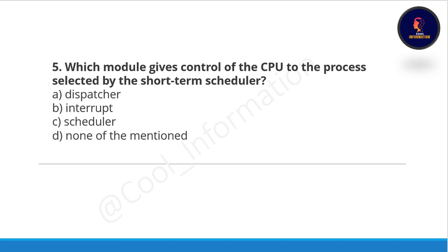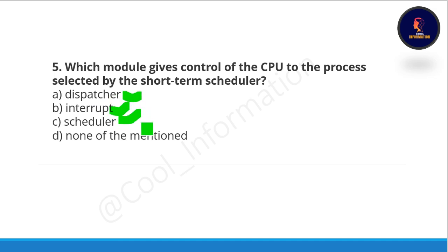Question five: which module gives control of the CPU to the process selected by the short-term scheduler? The options are: dispatcher, interrupt, scheduler, or none of the mentioned. The correct option is option A, which is dispatcher.